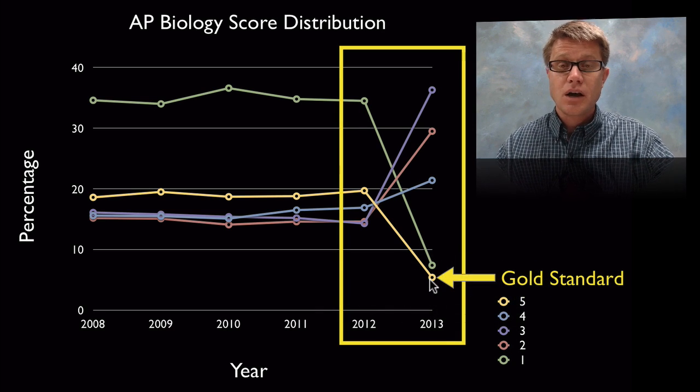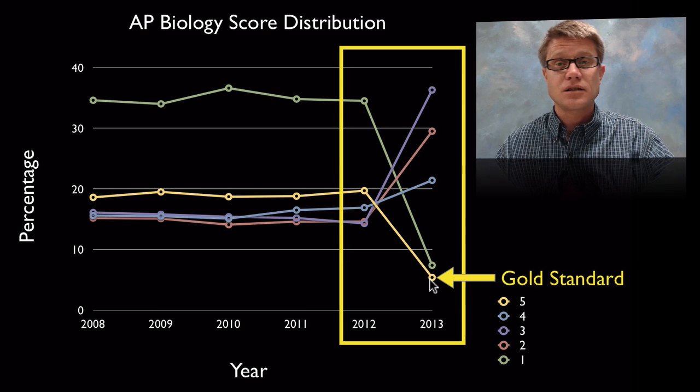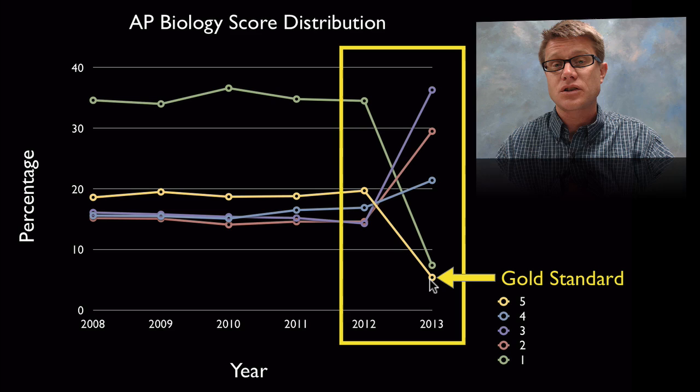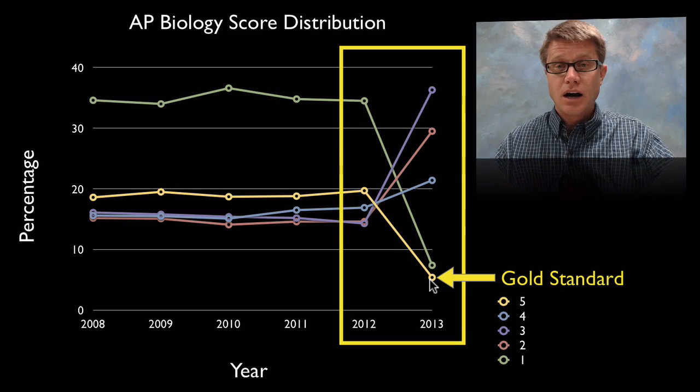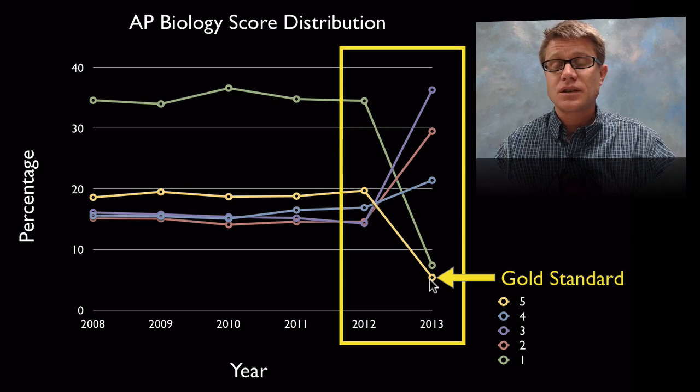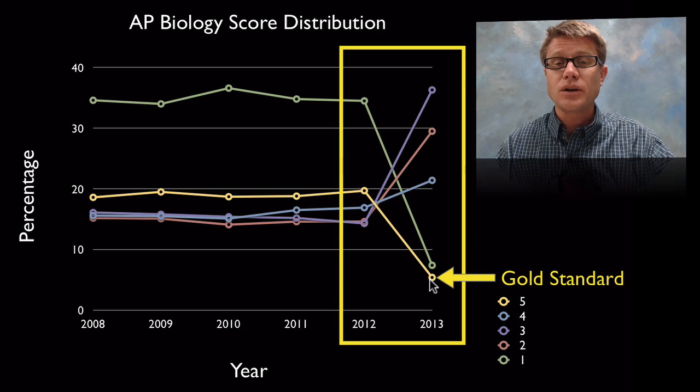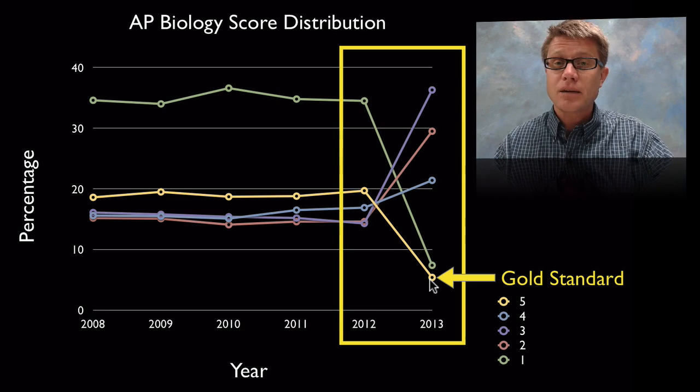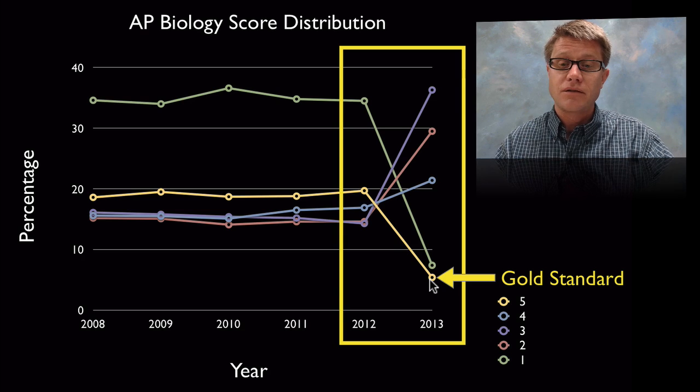And even the College Board wrote out a good description of this and said this is the new gold standard. If you want to get a five, this is how well you're going to have to understand that content. But for a lot of students this is disconcerting, because they see the only way you can be successful in an AP class is to get a five. And there's a lot of people this year that didn't get a five that would have gotten it in the years past.